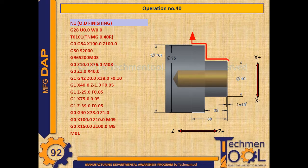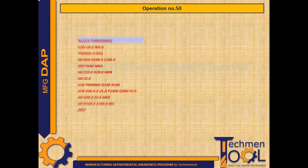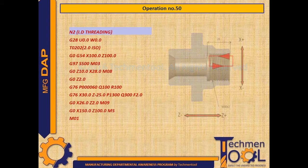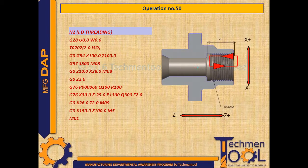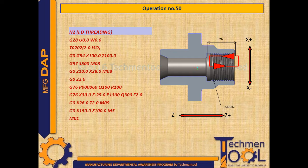Operation number 50 is for the threading cycle. The program follows all the steps similar to previous programs and the thread cycle starts with the G76 code block.